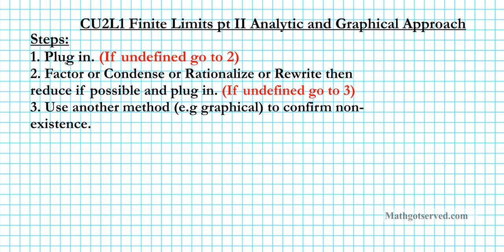So first of all, we have a finite limit problem. The first thing we want to do is plug in the constant into the variable. If you get an answer, that's good. If you have an undefined expression, you go to step 2. Step 2 requires you to do different things depending on what the problem looks like. You can either factor, condense, rationalize, or rewrite the problem, then reduce if possible and plug in again. If you get an answer, that's your result. If you still have an undefined expression, go to step 3, which involves using another method — it could be graphical or numerical — to confirm the non-existence of that limit.